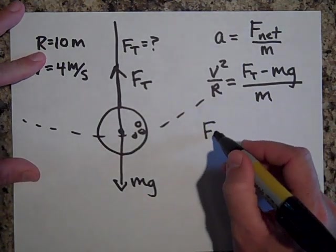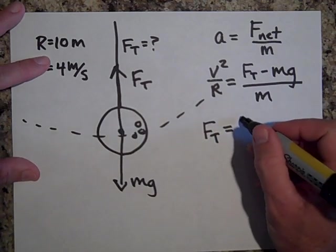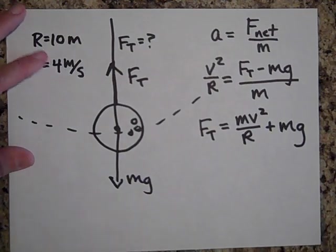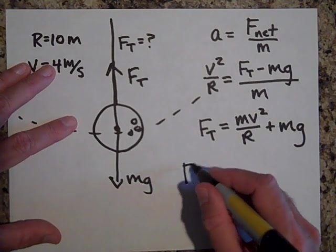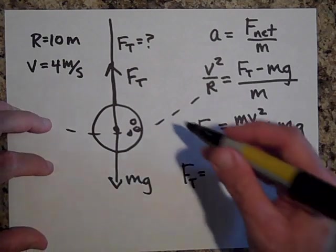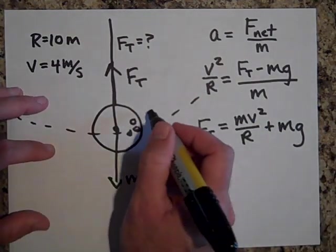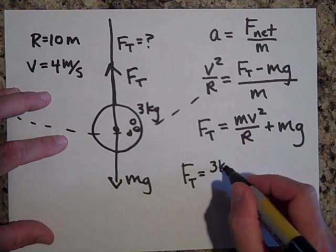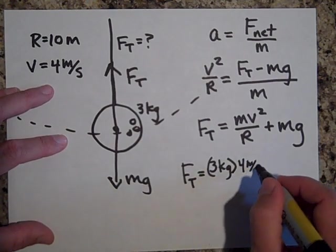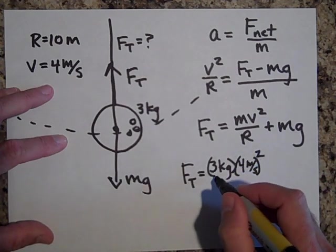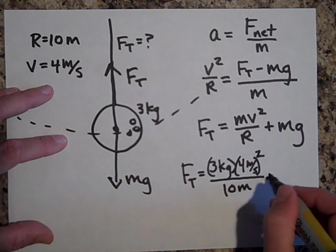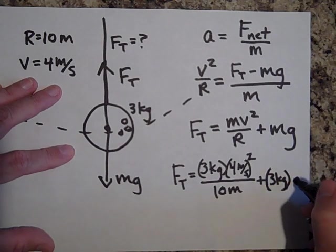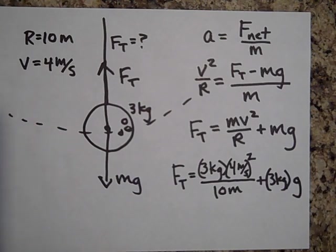So if I want to know what F_T is, just solve. Let's make the mass of this ball three kilograms. So the tension force is going to be three kilograms times four meters per second, that whole thing squared, all over 10 meters, plus m, three kilograms, times g. And so there you have it. I'll stop there, thanks.